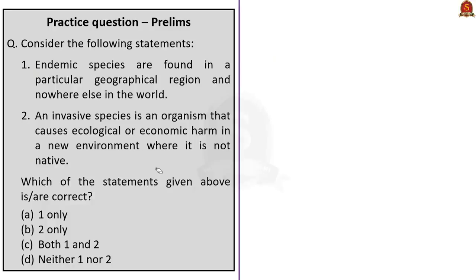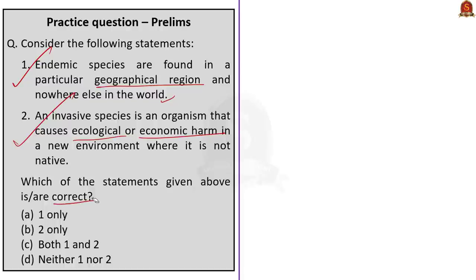The next question is another two-statement question. Statement 1: Endemic species are found in a particular geographical region and nowhere else in the world — this is correct, being the definition of endemic species. Statement 2: An invasive species is an organism that causes ecological and economic harms in a new environment where it is not native — this is also correct. The question asks for the correct statements, so the correct answer is Option C — both 1 and 2.